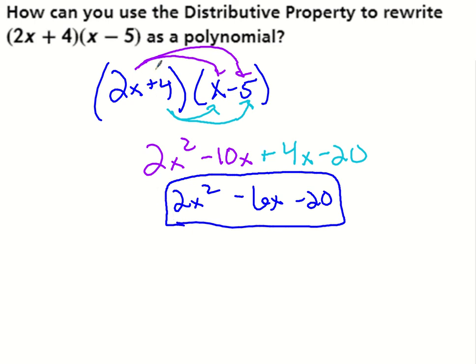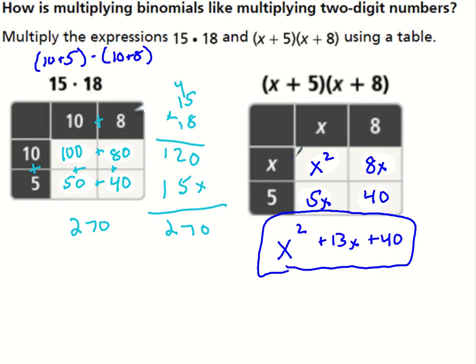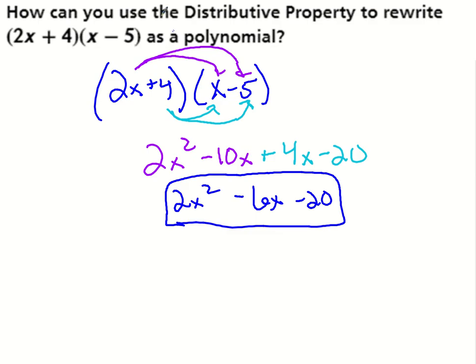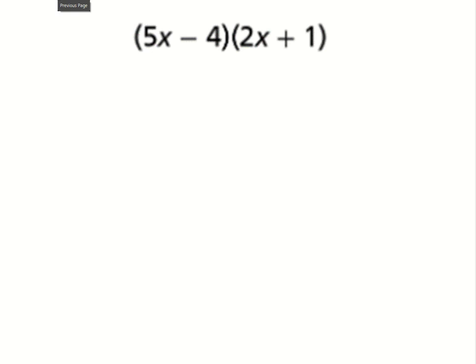Think distributive property — you're just doing it twice because you have multiple terms inside the parentheses. The table is essentially doing the same thing: x times x, x times 8, 5 times x, 5 times 8. Both methods work — use whichever format you prefer. Go ahead and try this one. Try setting it up as distributive property and see how it goes.